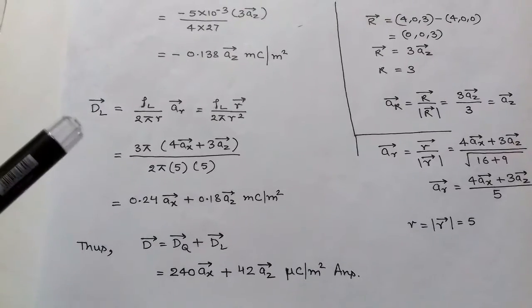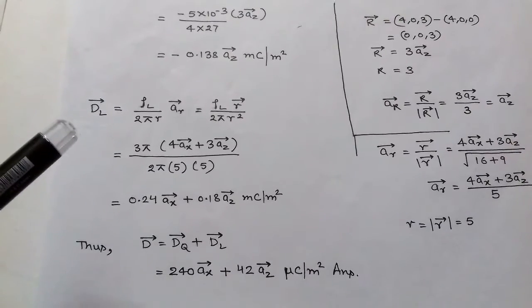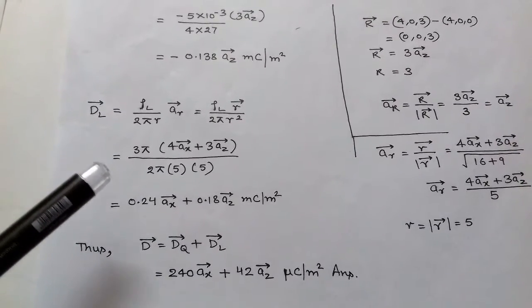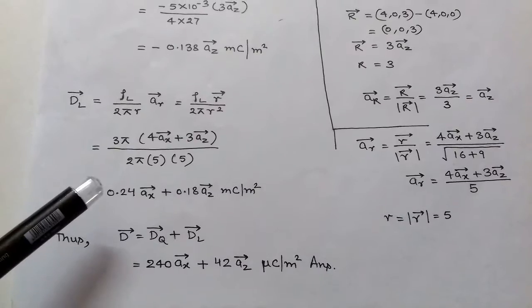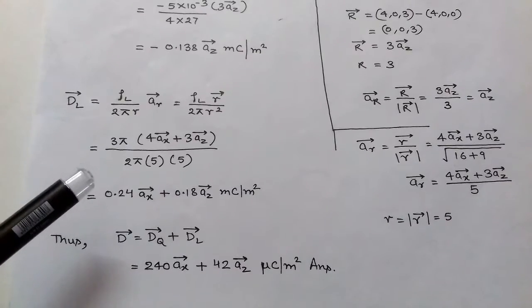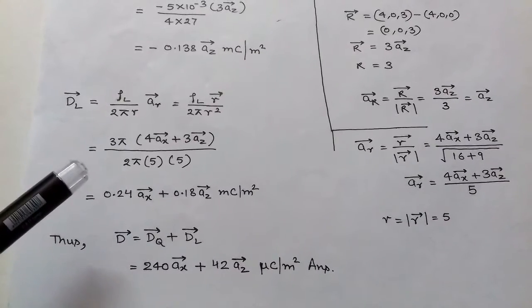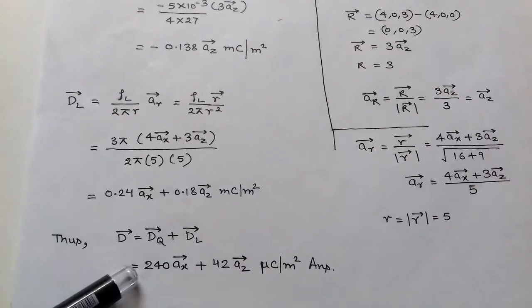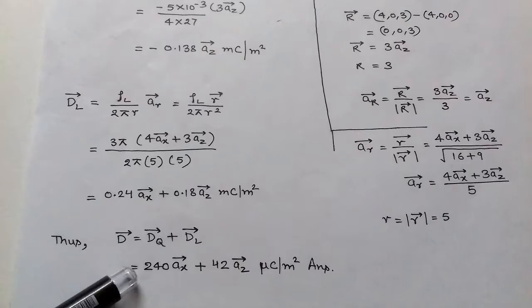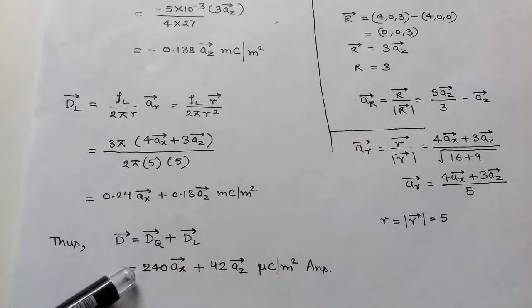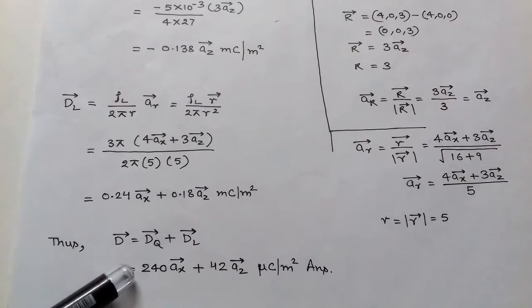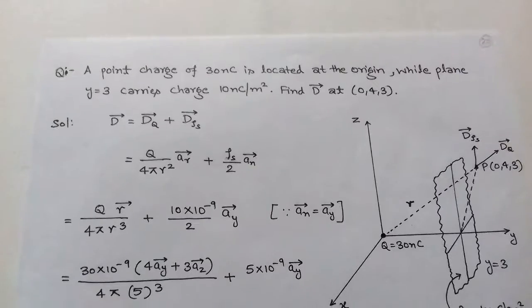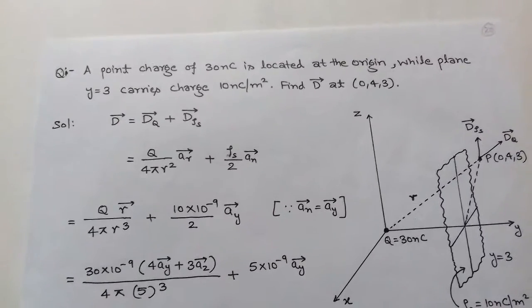We now add both contributions to find the total electric flux density. Adding the point charge and line charge components, the answer is D = 240ax + 42az μC/m².